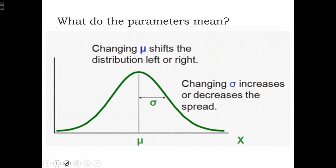So what do the different parameters mean? If this is the probability distribution function, where along the bottom we have different values of x, and across the side we have different values of the probability of x, then changing the mu is going to shift the distribution to the right and to the left.